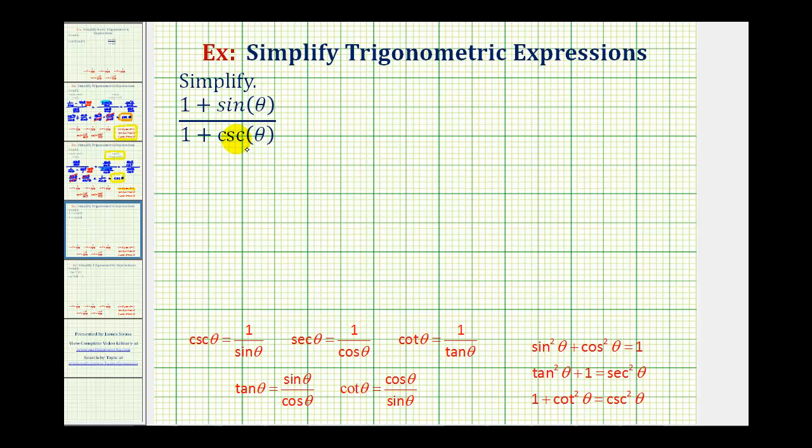Some are longer than others, but the end result should always be the same. We might first recognize that none of these trig functions are squared, so there's no obvious substitution with one of our Pythagorean identities.